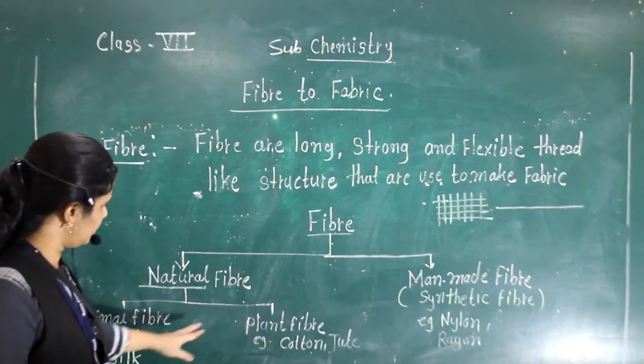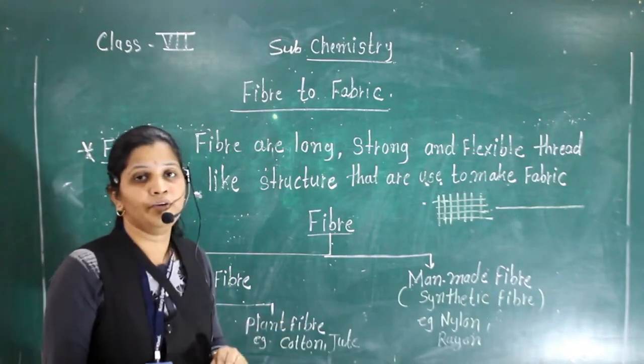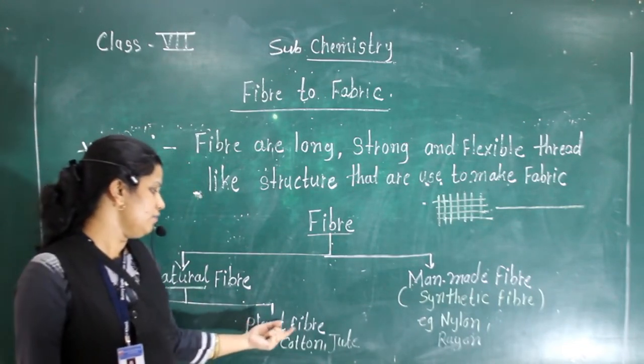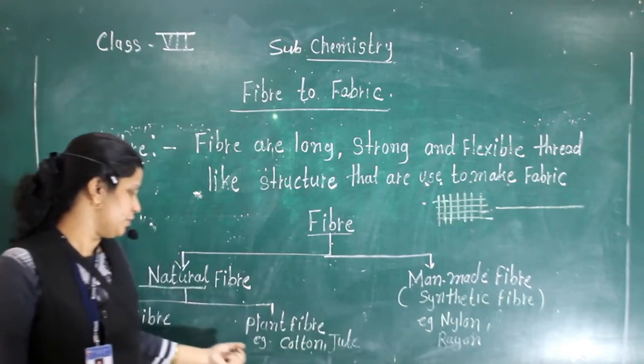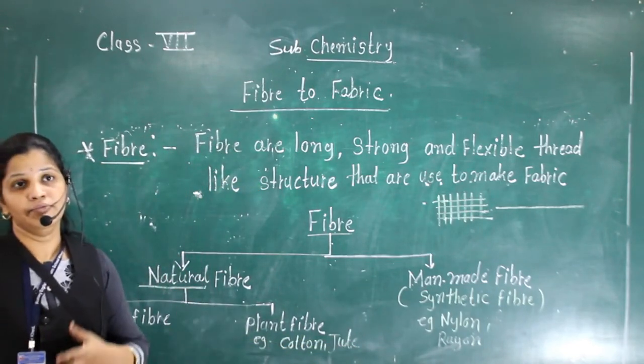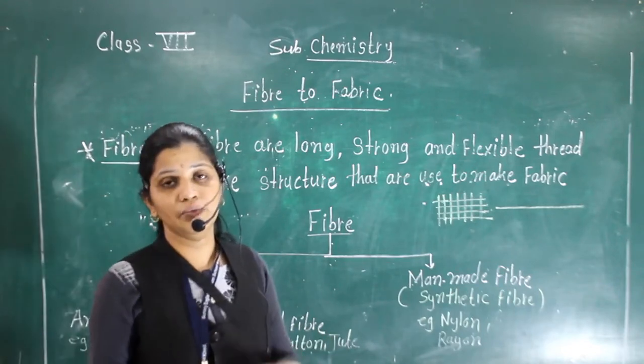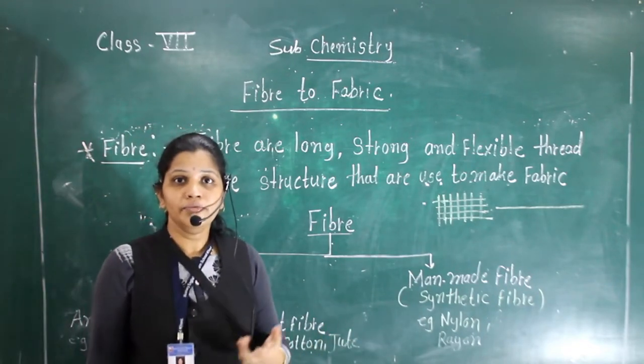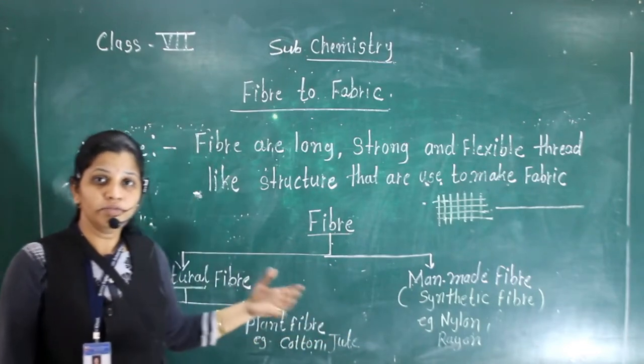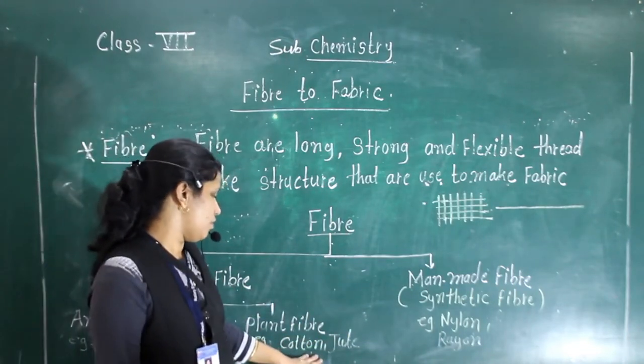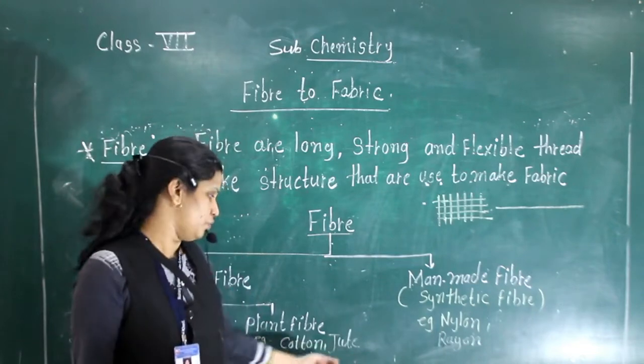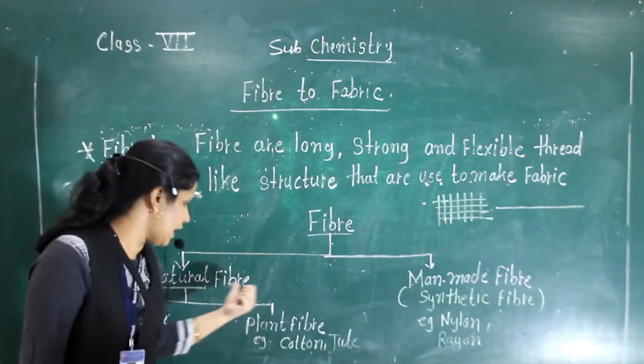Now the other type of fiber is plant fiber. Plant fiber is very easy or simple. Those fibers we are getting from plants are known as plant fiber. For example, cotton and jute. In summer season, mostly we are using cotton clothes. How do we get cotton clothes? This fabric is made by cotton fiber. Cotton we are getting from the cotton plant, and jute we are getting from the stem of the jute plant.